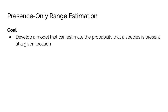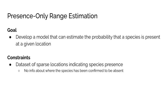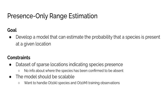Our goal is to develop a model that can estimate the probability that a species is present at a given location. However, we impose two important constraints. First, we want to train our model using presence-only data, which consists of locations where the species are known to be present, with no information about where species are absent. Second, we want the model to be efficient and scalable so it can take advantage of tens of millions of training points across tens of thousands of species.